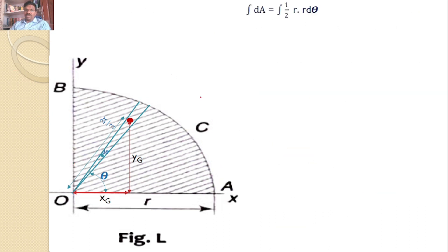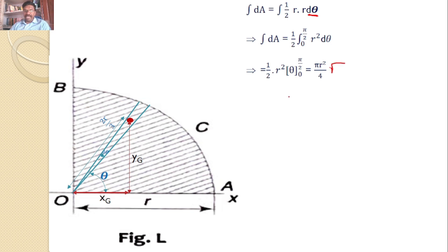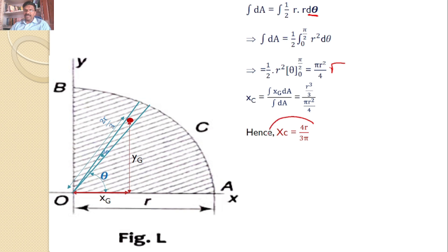Similarly, we calculate integral dA. Integral dA equals ½·R·R·d theta, so ½ times the integral from 0 to pi/2 of R squared·d theta. Taking R squared outside, integral of d theta becomes theta. So ½·R squared·theta evaluated from 0 to pi/2 gives pi·R squared by 4. Hence, the x-coordinate of the centroid for the quarter circle, xc, equals integral xg·dA divided by integral dA, which is (R cubed by 3) divided by (pi·R squared by 4). After simplification, you get xc equal to 4R by 3pi. This is the x-coordinate answer for the quarter circle.